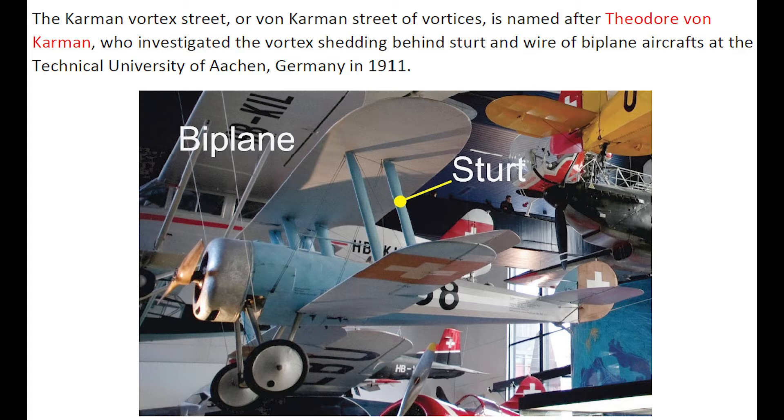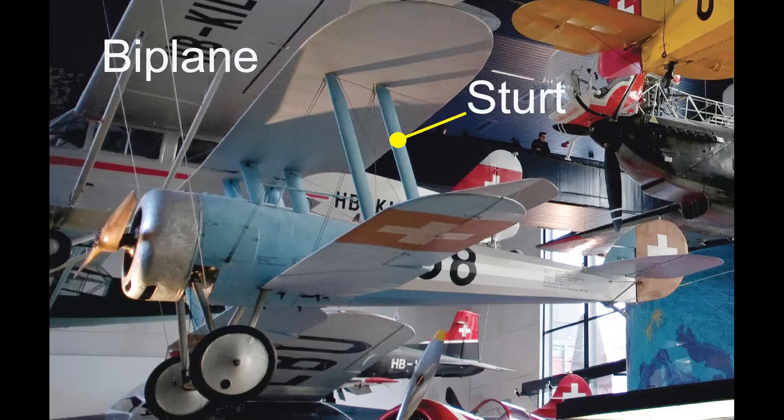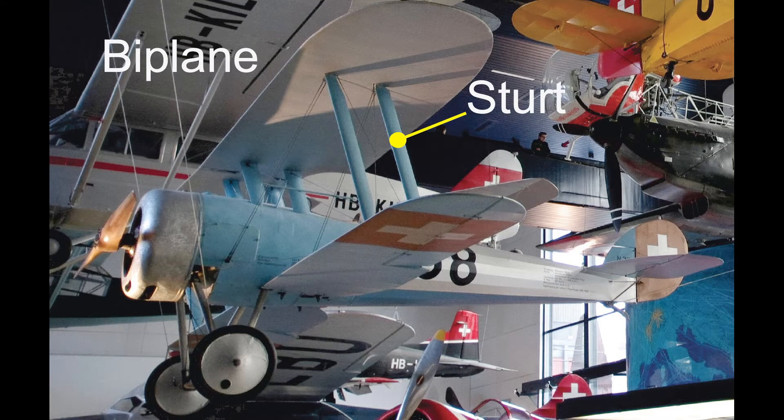The von Kármán street of vortices is named after Theodor von Kármán, who investigated the vortex shedding behind the strut of wire of biplane aircraft at the Technical University of Aachen in 1911.